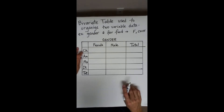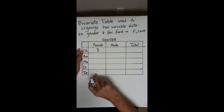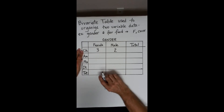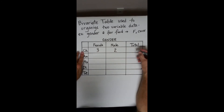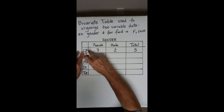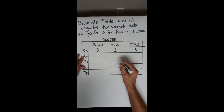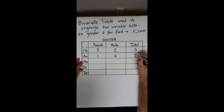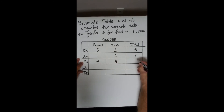In your sample there were three females and two males who said Chinese food was their favorite, giving a total of five people. One female and six males preferred American food for a total of seven. For Mexican food, four females and four males for a total of eight.